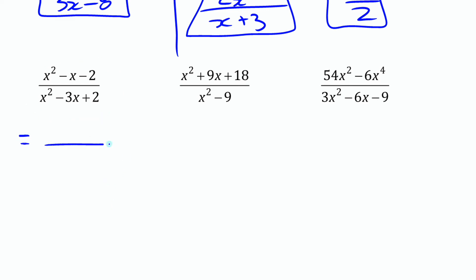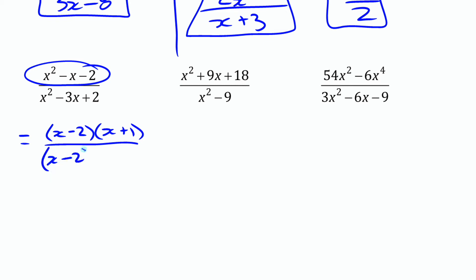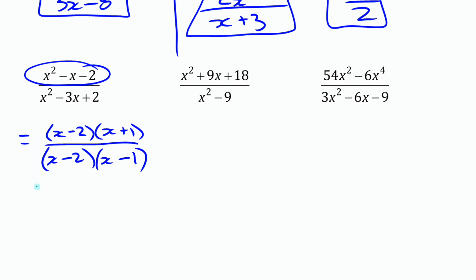So we write it in factored form. The numerator has no GCF, but factors into two binomials: (x minus 2)(x plus 1). The denominator similarly factors as (x minus 2)(x minus 1). Now we can eliminate common factors — both have (x minus 2), which represents the same number for any x, so we cross those out. We can't cancel (x plus 1) and (x minus 1) because they differ — if x were 10, one would be 11 and the other 9. The simplified form is (x plus 1) over (x minus 1).